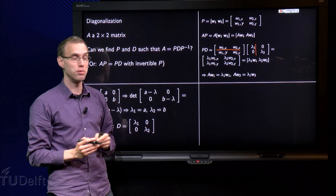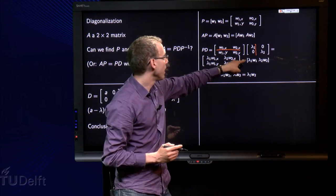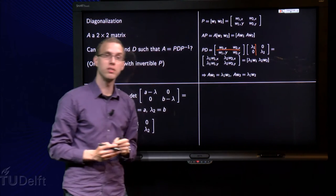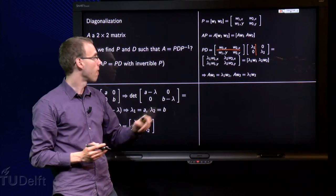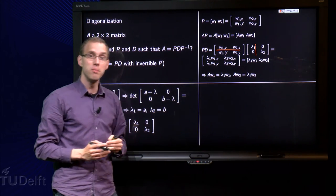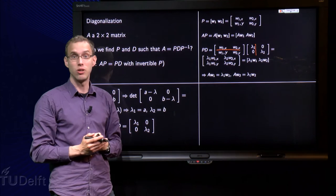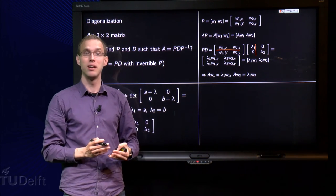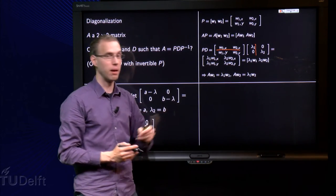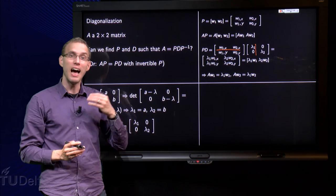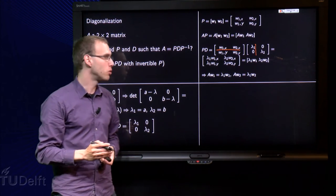So what do we see? PD has to be the same as AP. So that means we need Aw₁ equals λ₁w₁ and Aw₂ equals λ₂w₂. But that means we know for which vectors this holds. That means w₁ has to be an eigenvector of A belonging to λ₁, and w₂ has to be an eigenvector of A corresponding to λ₂.